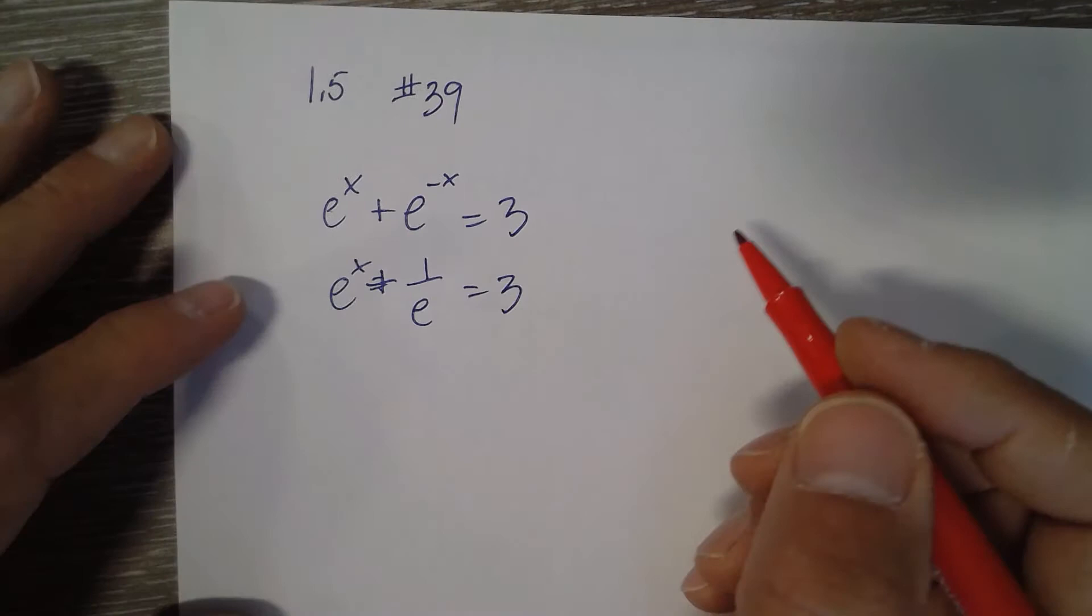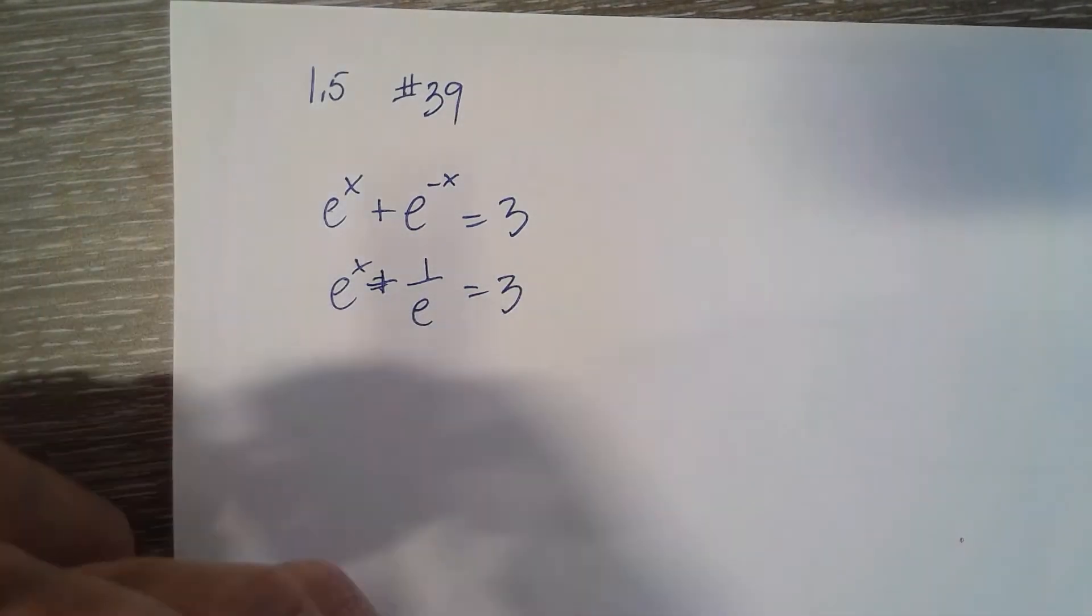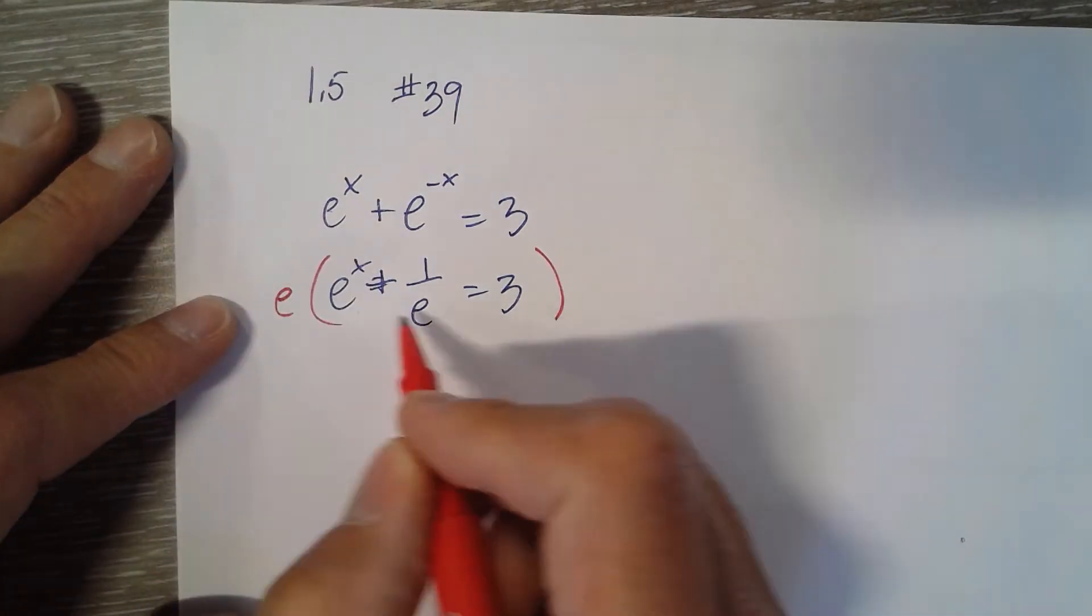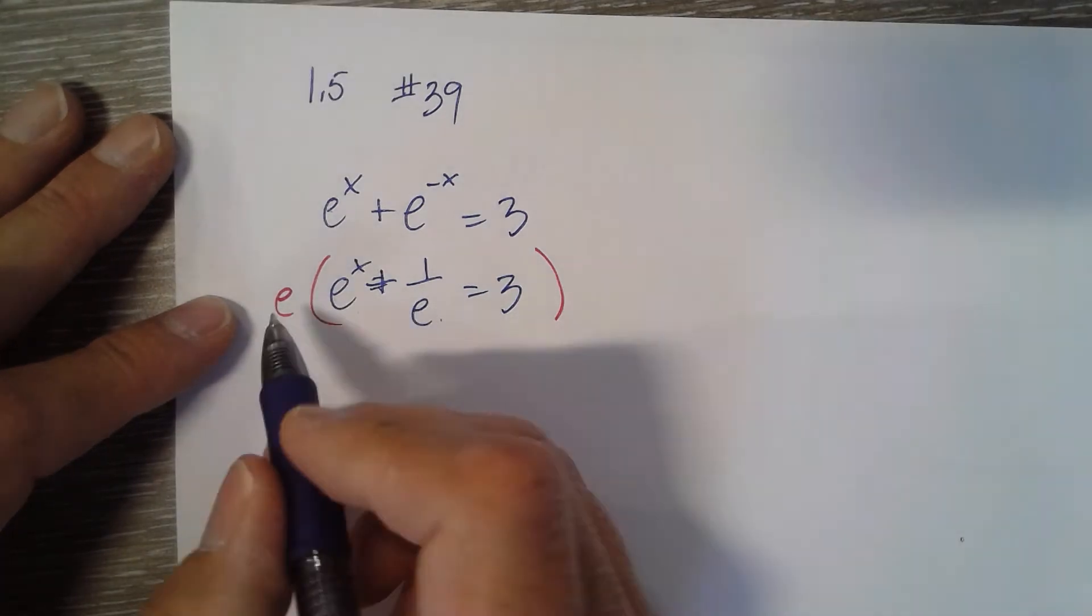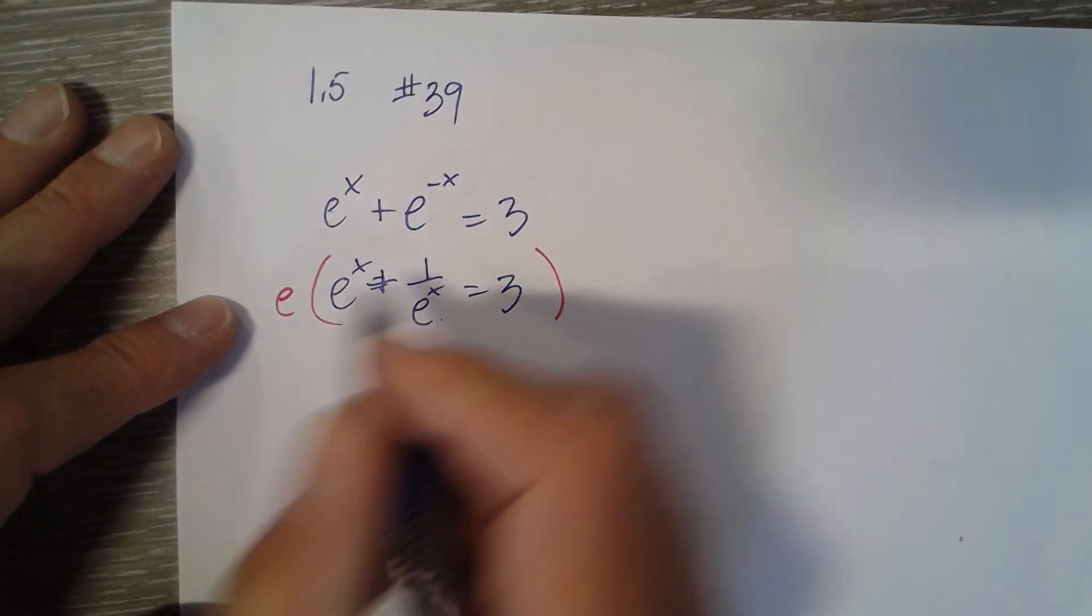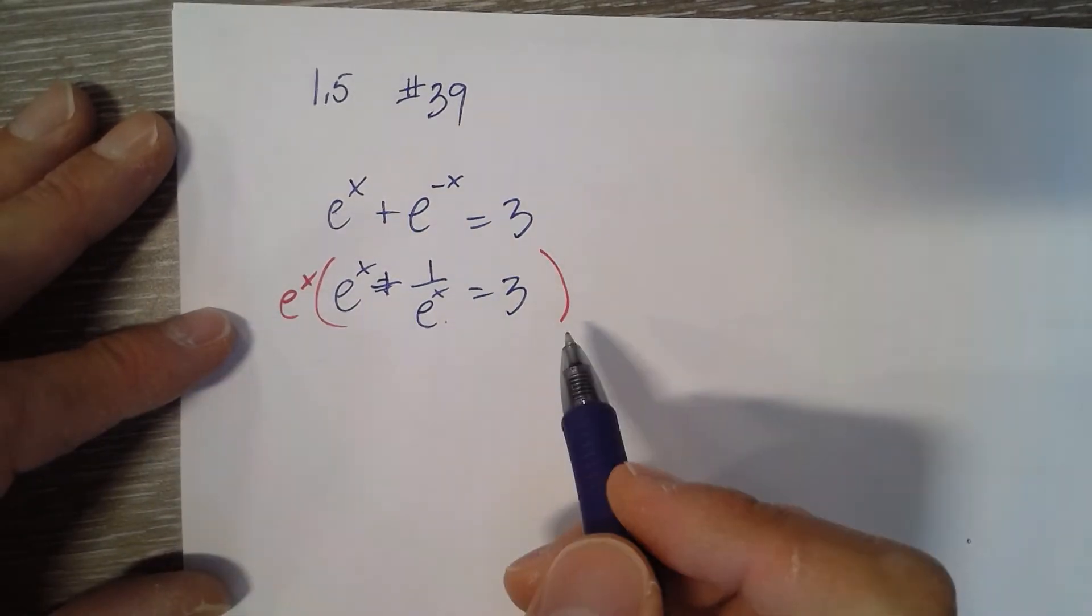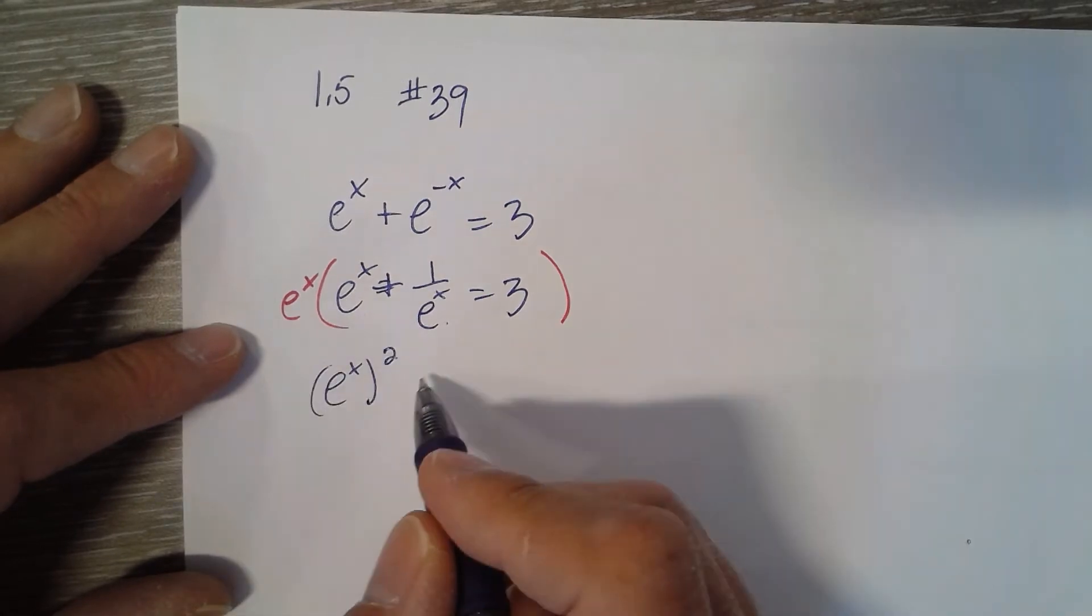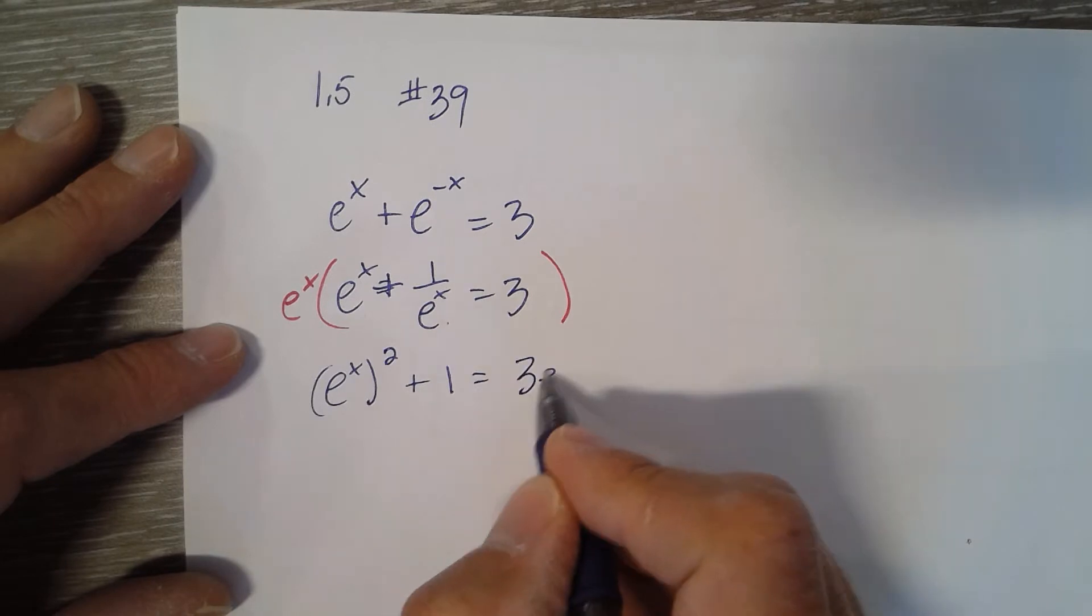And then I like to eliminate fractions. I get rid of negatives and I get rid of fractions. So I have an e in the bottom. I'm going to multiply both sides of the equation by e to the x because that will undo the e on the bottom. So multiply everything by e to the x. So I have e to the x times e to the x. I'll leave it as e to the x squared plus 1 equals 3 e to the x.